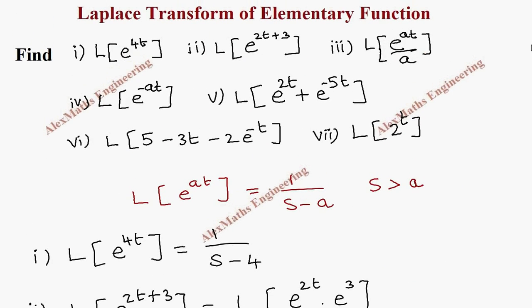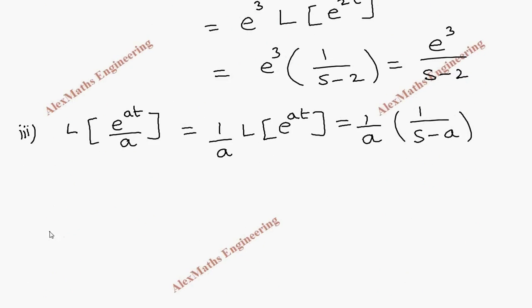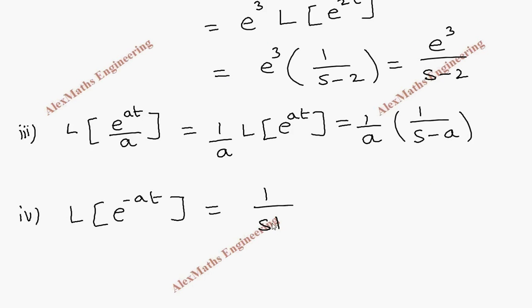Coming to the fourth subdivision, we have e^(-at). We apply the same formula, and in place of a we have minus a, so the Laplace transform becomes 1/(s + a).